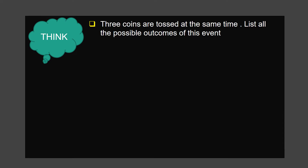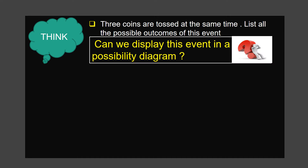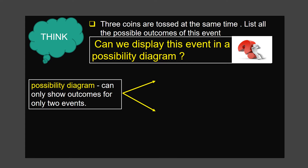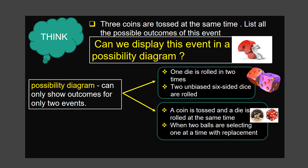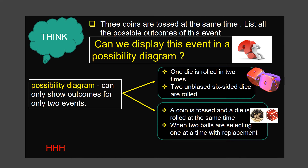Here is one more question. Three coins are tossed at the same time. List all the possible outcomes of this event. Can we display this event in a possibility diagram? No, because a possibility diagram can only show outcomes for two events — such as one die rolled twice, two unbiased six-sided dice rolled, a coin tossed and a die rolled at the same time, or two balls selected one at a time with replacement. One possibility is HHH: head, head, head.